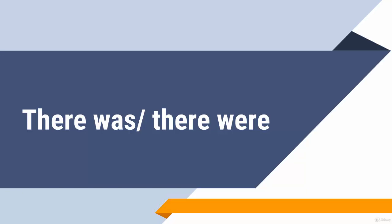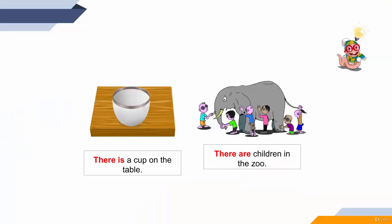In this video, I want to pay special attention to the structure there was, there were, and of course its forms: there wasn't, was there, were there, and so on. The situations you use there is or there are are the same in which you are going to use there was or there were.